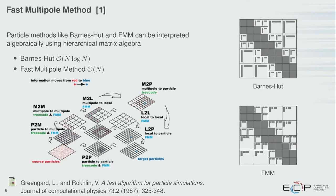If you are familiar with the Fast Multipole Method, these ideas may look familiar. You can interpret particle methods like the Fast Multipole Method and Barnes-Hut algebraically using hierarchical matrix techniques. To compute all pairwise interactions naively costs n squared; the Fast Multipole Method does this in linear complexity; Barnes-Hut is n log n — similar to the nested basis idea that takes you from n log n down to order n.